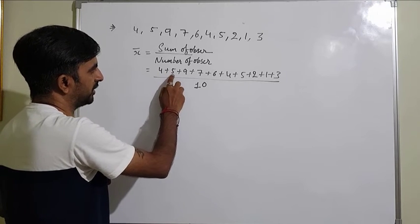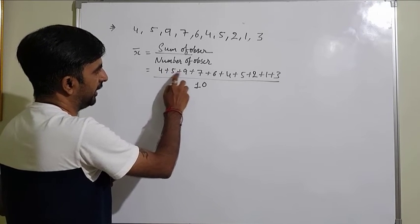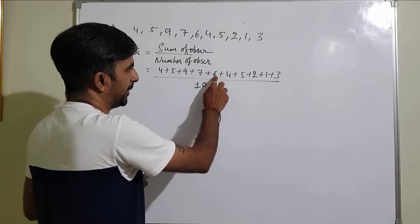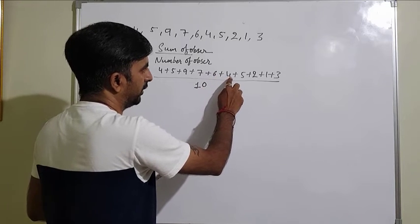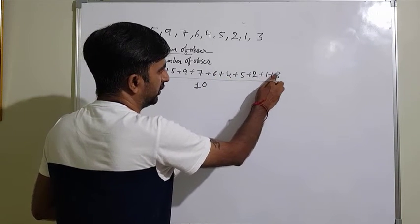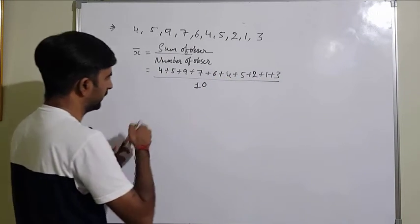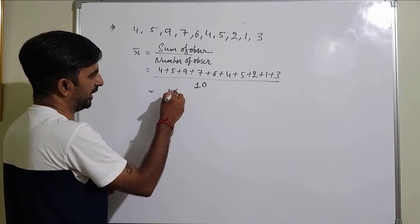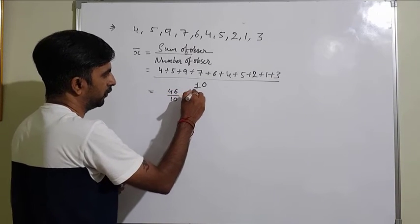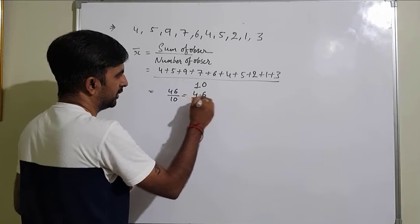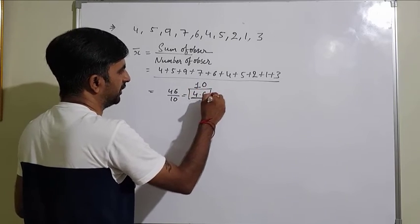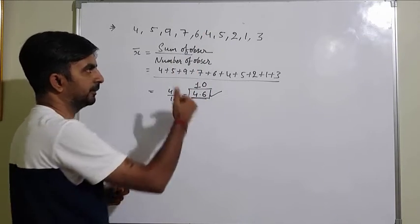Sum of observations means you add all values: 4 + 5 + 9 + 7 + 6 + 4 + 5 + 2 + 1 + 3, and divide by the number of observations, which is 10. Adding these gives 46, so 46 divided by 10 equals 4.6. This is the mean of the given individual data.